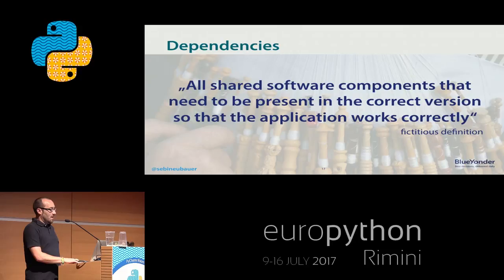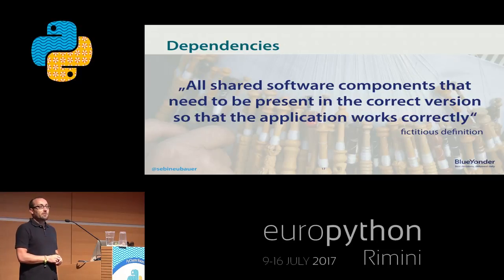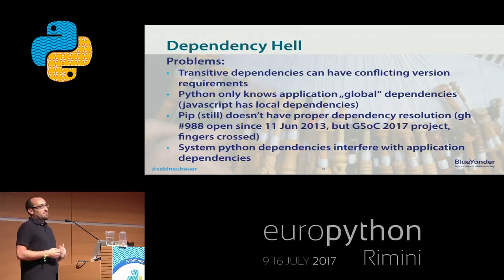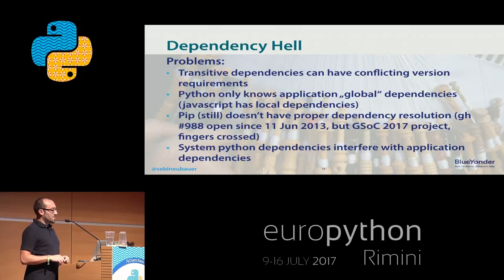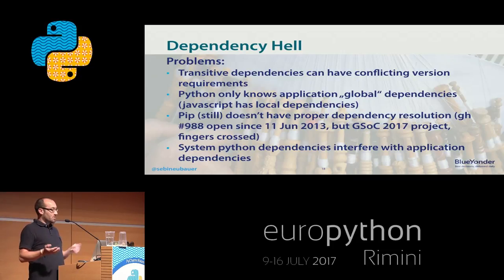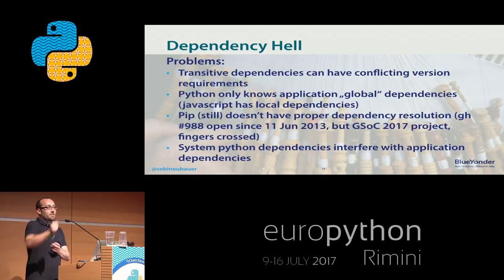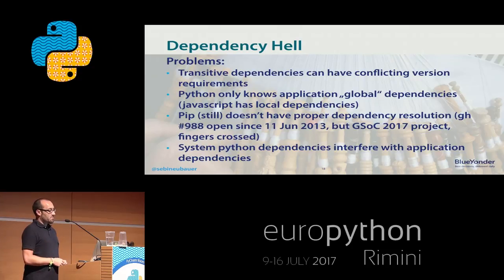Dependencies — my definition: all shared software components that need to be present in the correct version so that the application works correctly. There's a thing called dependency hell. You can have conflicts and transitive dependencies: A depends on B and C, and C depends on D in different versions, so you cannot really resolve it. In Python, we only have application-global dependencies — if Flask depends on something, I cannot depend on it in another version. This is possible in JavaScript or other languages, but not currently in Python.